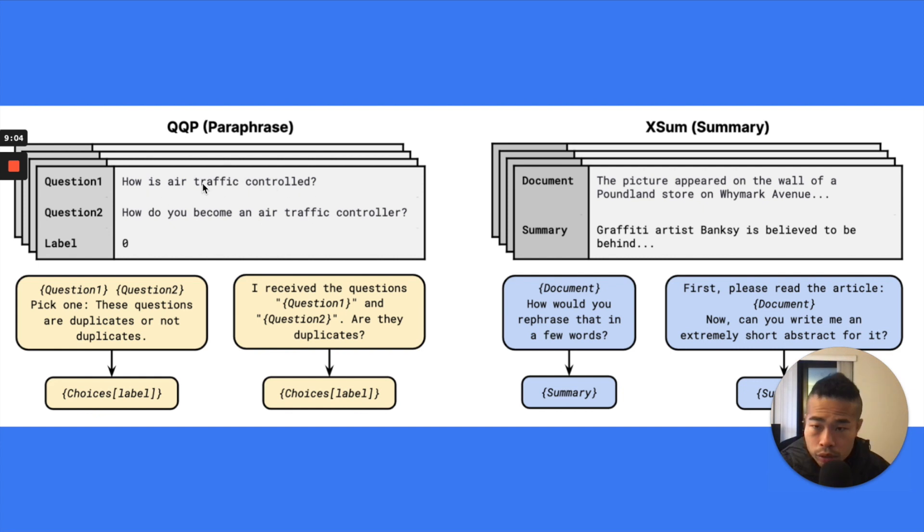This is just some more visual for how they prompt the things. So paraphrase, basically there are two questions and you want to know are these two questions same one or not the same one. So how they convert that to a prompt, they usually have multiple templates for one task. For this task, they have this template, question one, question two, pick one. This we already seen previously. And this is another one. I receive the questions, question one and the question two, are they duplicates? So that's just better. They want to give the model different templates.